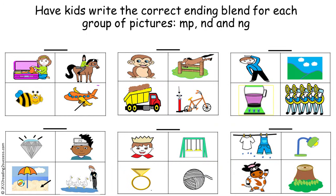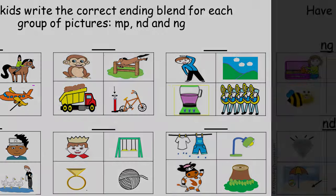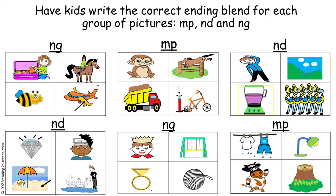For this activity, have kids write the correct ending blend for each group of pictures: MP, ND, and NG. This is the completed example.